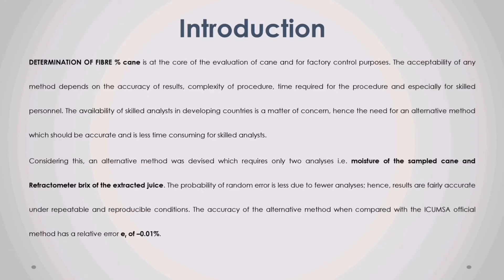Introduction. Determination of fiber percent cane is at the core of the evaluation of cane and for factory control purposes. The acceptability of any method depends on the accuracy of results, complexity of procedure, time required, and especially the need for skilled personnel. The availability of skilled analysts in developing countries is a matter of concern, hence the need for an alternative method which is accurate and less time-consuming. An alternative method was devised which requires only two analyses: moisture of the sampled cane and refractometer brix of the extracted juice. The probability of random error is less due to fewer analyses, hence results are fairly accurate under repeatable and reproducible conditions.